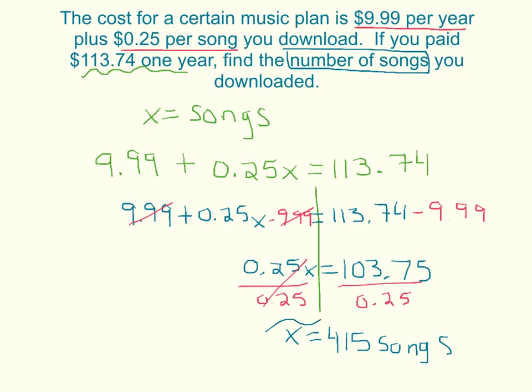You should get 415 songs. That's a lot of music for one year. But check that you defined the variable, wrote the equation, and solved it. So that's the main idea for this lesson for writing and solving two-step equations. So good luck!